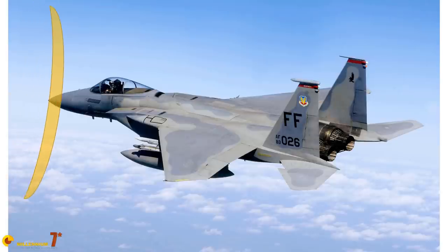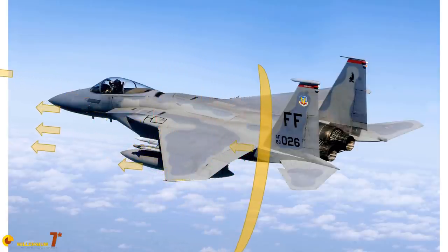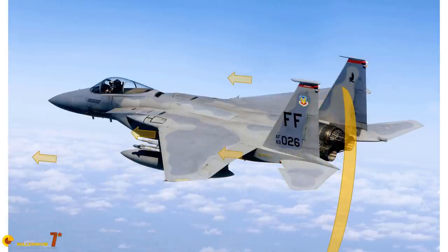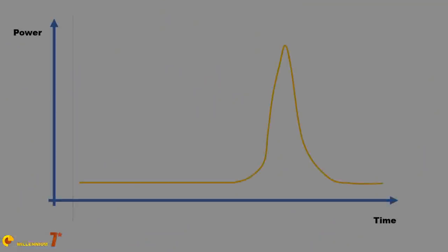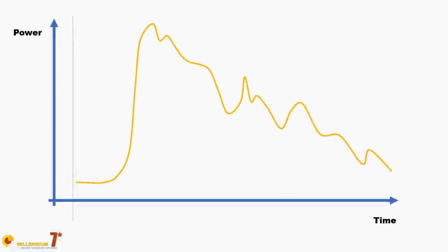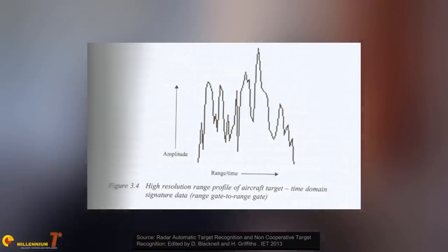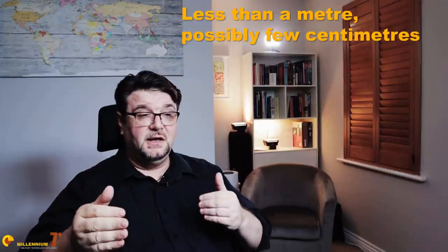Another common technique is High Resolution Range Profiling (HRRP). Since the aircraft is a physical object with dimensions, if you emit a very short pulse toward the target, the return may be spread in time — the return from the farthest parts of the aircraft arrives later. So an emitted pulse with one shape may come back with a different, stretched shape. This shape seen in the time domain is somewhat indicative of the aircraft's shape and can be used to recognize it.